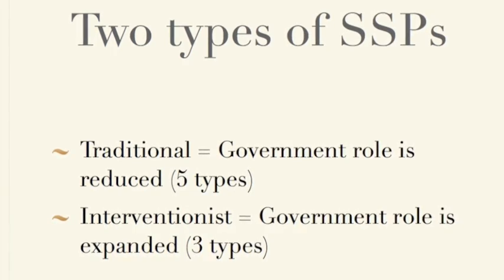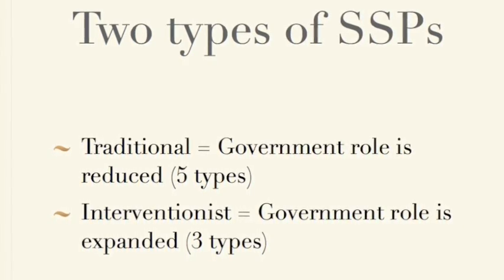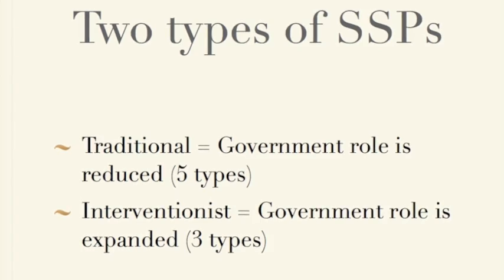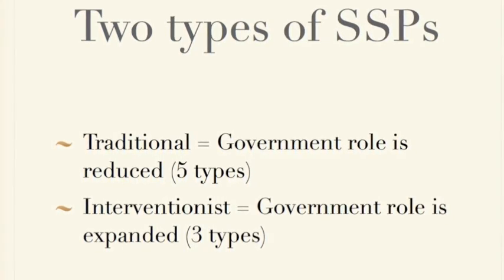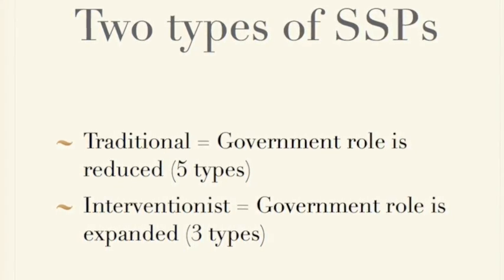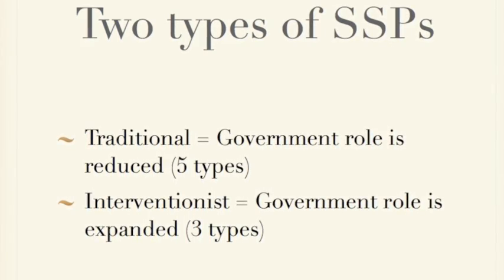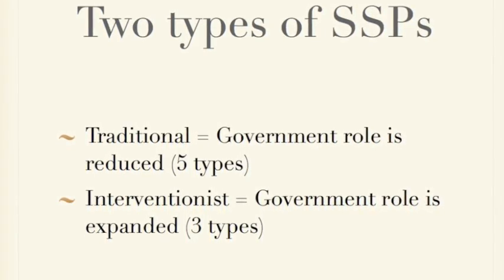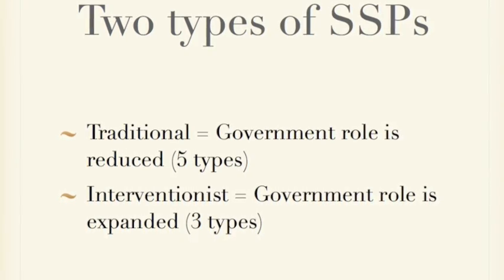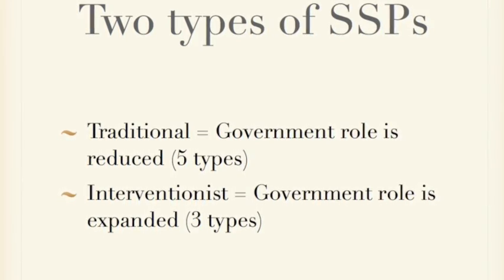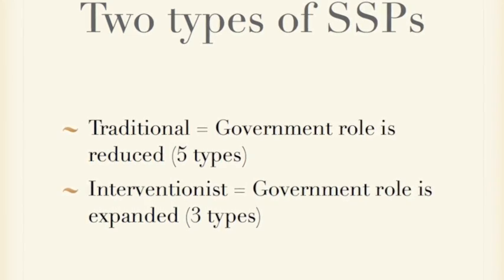In this video we're going to explore 8 different types of supply side policies. Five are traditional supply side policies, meaning that the government's role in the economy is reduced by implementing them. And three are interventionist types, meaning that the government's role is actually increased by implementing these policies.